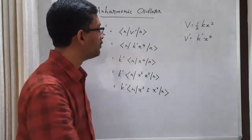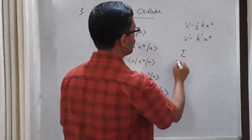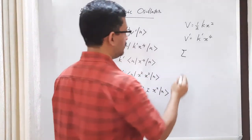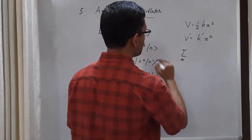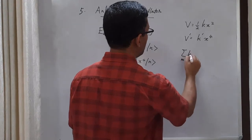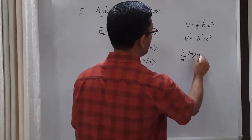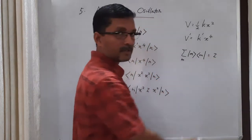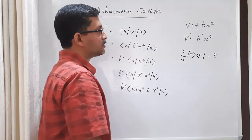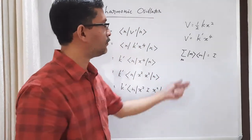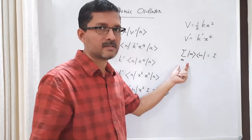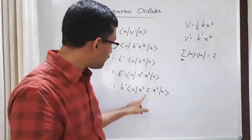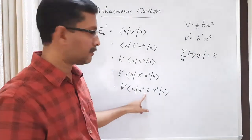The completeness condition is: summation over m of |m⟩⟨m| equals the identity operator. This is the projection operator. The summation over projection operators along all states gives you the identity. So, that completeness condition I can introduce in between the two x² operators.